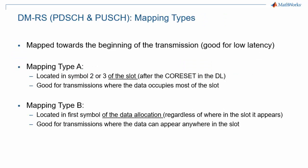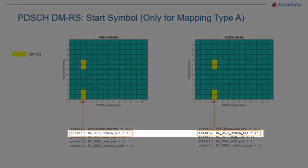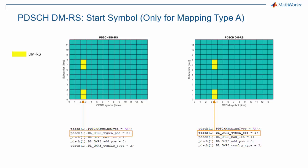This slide summarizes those statements. Note that in both configurations, DMRS are toward the beginning of the allocation. For mapping type A, whether DMRS are to be found in symbol 2 or symbol 3 is specified by a higher layer parameter represented by DL-DMRS-TypeA-Position in 5G toolbox. The picture on the left has this parameter set to 2, while the picture on the right has it set to 3. Remember that symbol numbering starts at 0 and not 1.